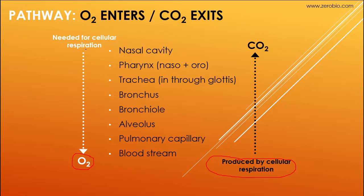Oxygen is needed because it's used in cellular respiration — the process that creates ATP, or energy, for the body. Cellular respiration requires oxygen in the presence of glucose, which is provided by the digestive system, so there's a link between the two systems. When we talk about the respiratory system, we're talking about the lungs and breathing, as opposed to cellular respiration. Carbon dioxide is produced as a waste product and must be expelled. That is a summary of the respiratory system — I hope that helps, see you soon.